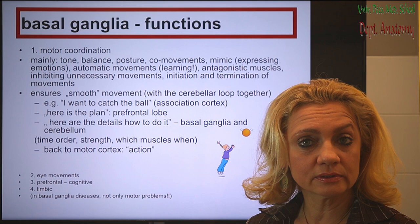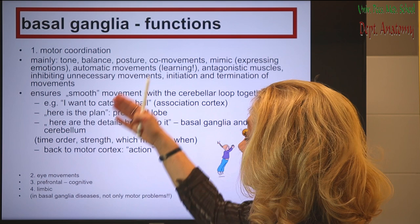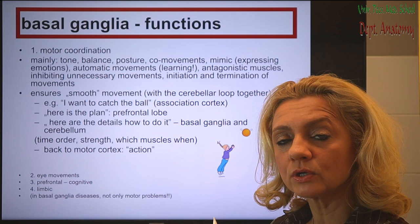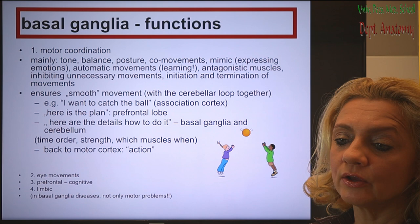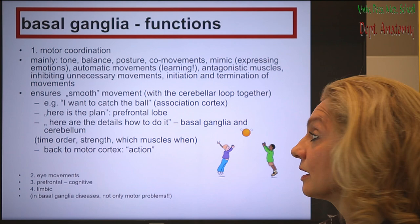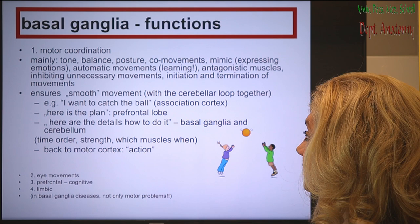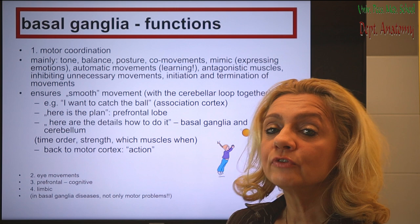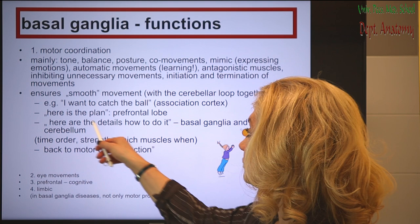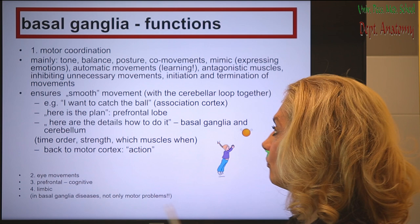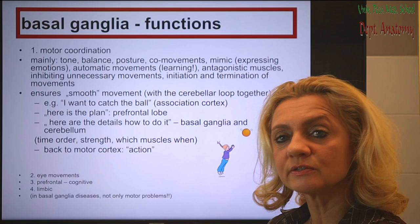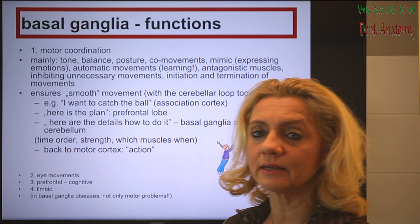For example, if you want to catch a ball, many parts of the cortex are involved. You remember things, you see the ball with the visual cortex, you hear something, you decide to do it — it's a voluntary movement and you are motivated. Many different parts of the cortex are involved in this decision. If you have already practiced it, there is a learned movement, and the prefrontal lobe has a plan for it. But to make the movements smooth, we need the extrapyramidal system — the basal ganglia and cerebellar loops.